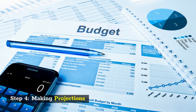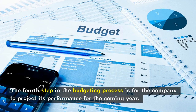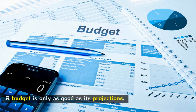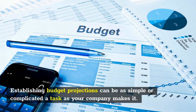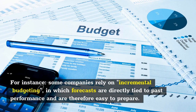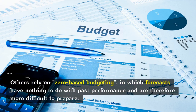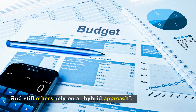Step four: making projections. The fourth step in the budgeting process is for the company to project its performance for the coming year. A budget is only as good as its projections. Establishing budget projections can be as simple or complicated a task as your company makes it. For instance, some companies rely on incremental budgeting, in which forecasts are directly tied to past performance and are therefore easy to prepare. Others rely on zero-based budgeting, in which forecasts have nothing to do with past performance and are therefore more difficult to prepare. And still others rely on a hybrid approach.